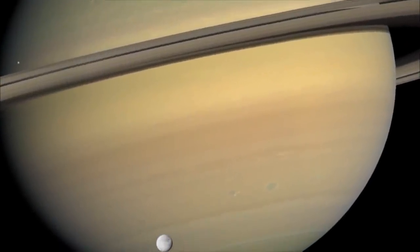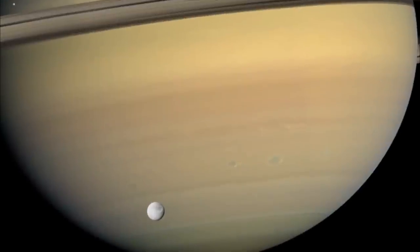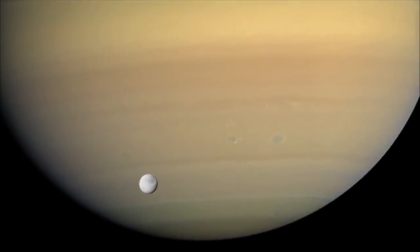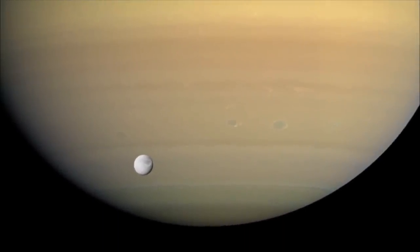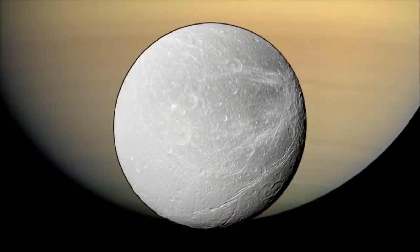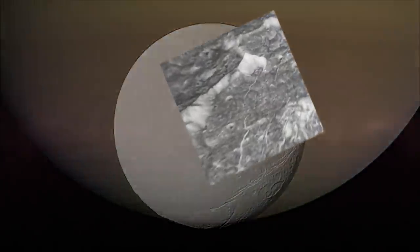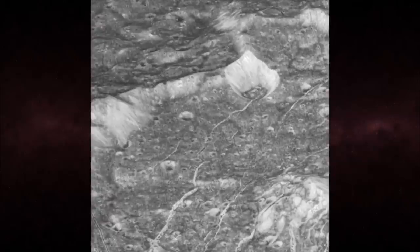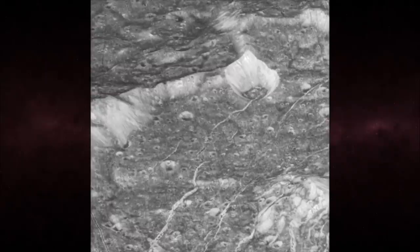Looking at Dione from afar, scientists long wondered about a series of wispy white lines running across its surface. Now Cassini has revealed the lines are the bright faces of steep cliffs formed when Dione was repeatedly fractured by internal forces.